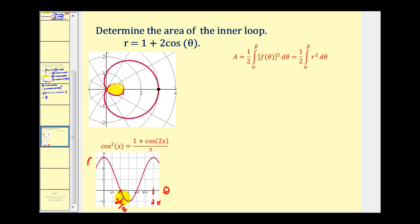We can see that between two pi over three and four pi over three, the radius is negative. Two pi over three to four pi over three would be this region here, but notice that since r is negative, we'd be plotting points in the opposite direction, or points on the inner loop. So this graph verifies that the inner loop is traced between two pi over three and four pi over three radians.